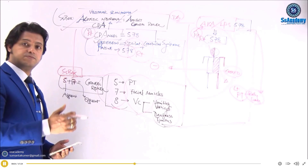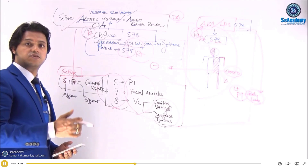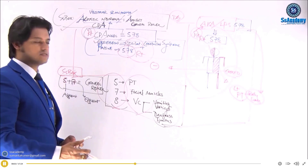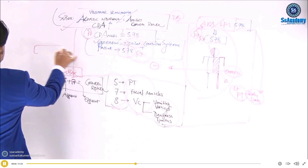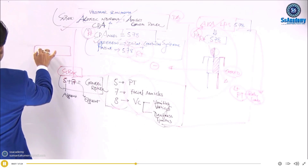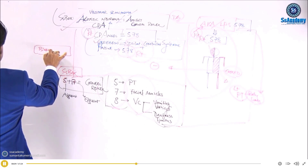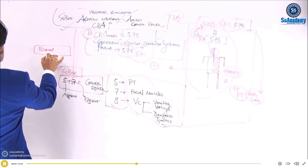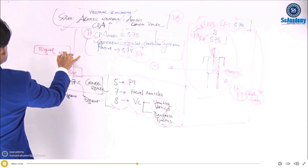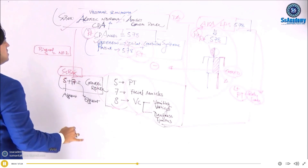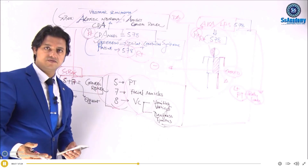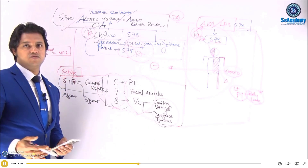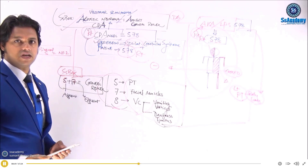Summary: acoustic neuroma — A for absent, C for corneal reflex. Bilateral schwannoma is neurofibromatosis type 2. Sometimes even unilateral acoustic neuroma can be part of neurofibromatosis type 2.